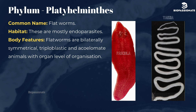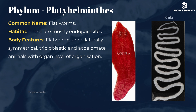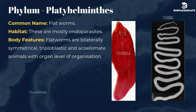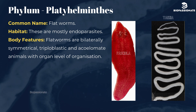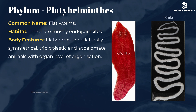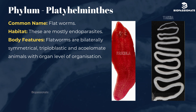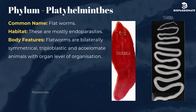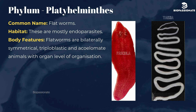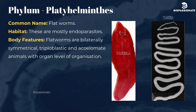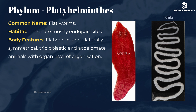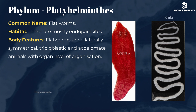Phylum Platyhelminthes, commonly known as flatworms. These are mostly endoparasites, living inside the body of a host. Flatworms are bilaterally symmetrical, triploblastic, and acoelomate animals with organ level of organization. Common examples are Fasciola (liver fluke) and Taenia (tapeworm).